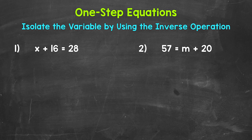Let's jump into number one, where we have x plus 16 equals 28. Now we need to isolate that variable of x. We need to figure out what x equals. Since 16 is being added to x, we need to undo that addition by using the inverse operation, so the opposite operation. The opposite of addition is subtraction, so let's subtract 16 from the left side of the equation. Now whatever we do to one side of the equation, we must do to the other in order to keep it balanced and equal. So let's subtract 16 from the right side as well.